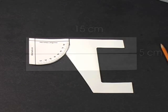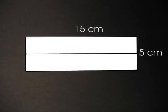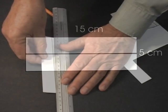Next we create a handle. Cut a thin card rectangle 5 centimeters by 15 centimeters and draw a line down the center. Fold the card on the center line.